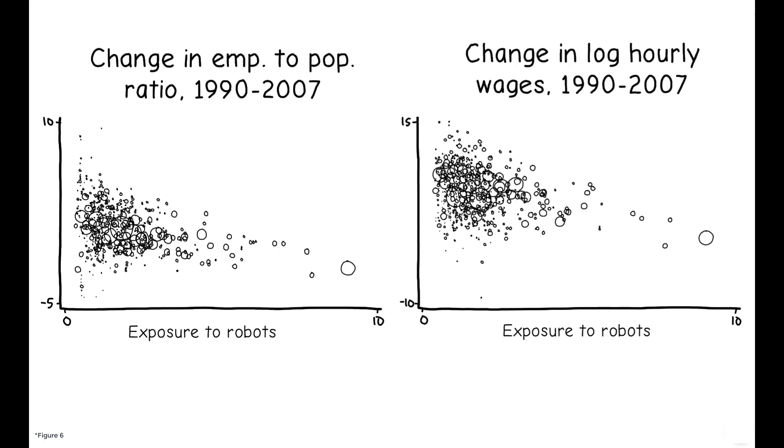This figure shows the main results of the paper. Even after controlling for a number of demographic, industry, and local labor market trends, there is a strong negative relationship between exposure to robots and changes in both the employment-to-population ratio and log-hourly wages.